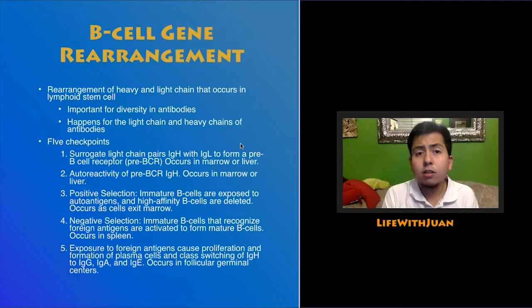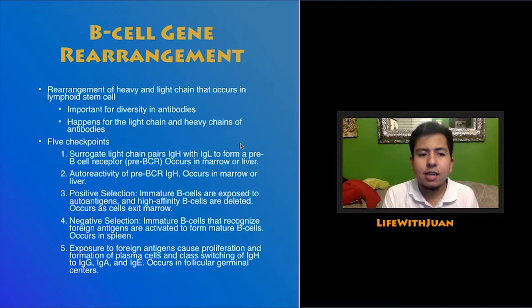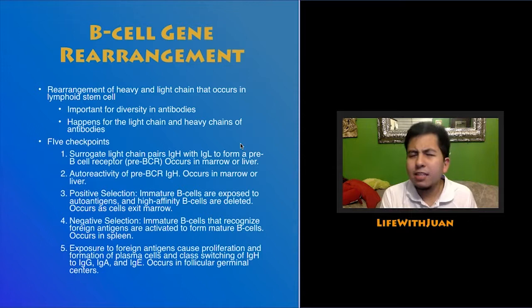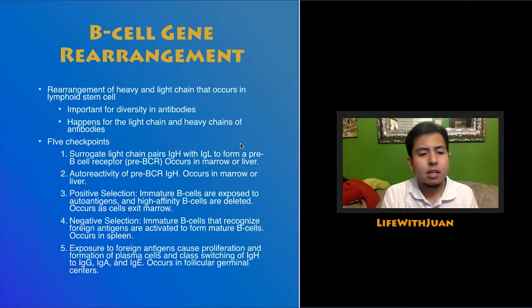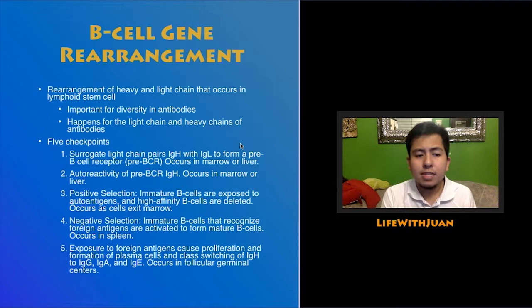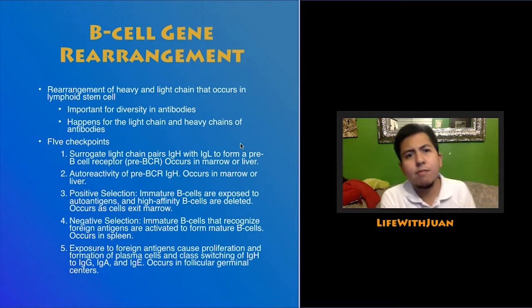Next is positive selection: immature B cells are exposed to auto-antigens. If a B cell binds too tightly to your own cells, it is deleted — because you want B cell antibodies to bind to foreign antigens, not self-antigens. This occurs as B cell progenitors exit the bone marrow. Then there is negative selection — the removal of B cells that don't react to foreign antigens, happening in the spleen. B cells need to react to foreign antigen to promote their growth and differentiation into plasma cells.